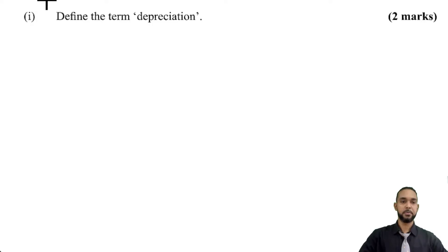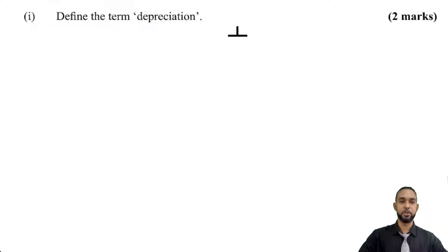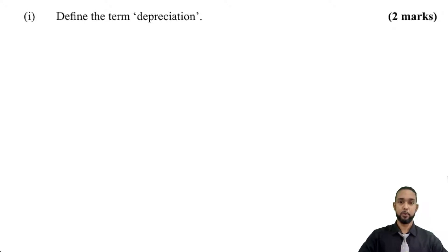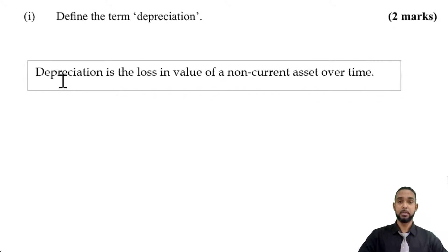The first thing they're asking us to do is simply to define the term depreciation. You can have simple definitions or complicated definitions — it's only worth two marks, so don't go overboard. What I put is very simple: depreciation is the loss in value of a non-current asset over time.